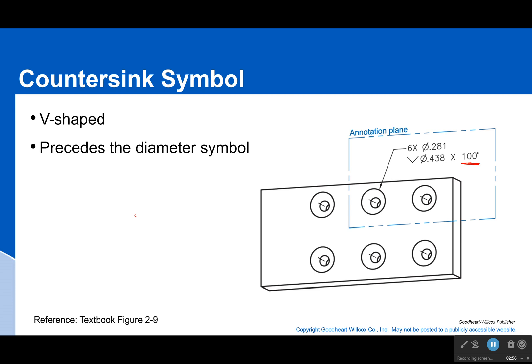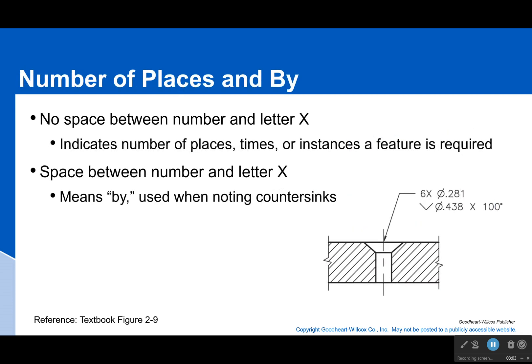But you see some X's in there. You see a 6X and you see just that X in between the 0.438 and a hundred degrees. Well, what does that mean? It means number of places and by, depending on its usage. So if there's no space between the number and the letter X, so right here, 6X, that's to tell me that there's six of these countersink holes and that this dimension applies to all of them.